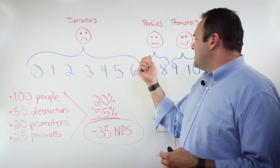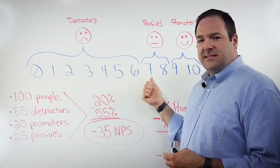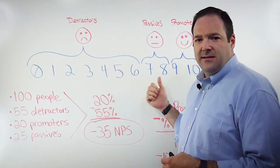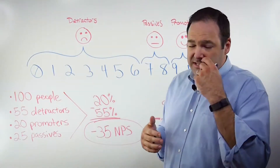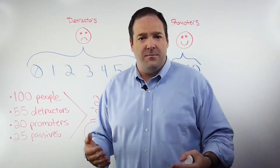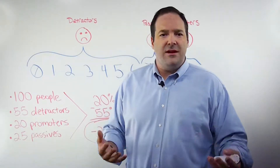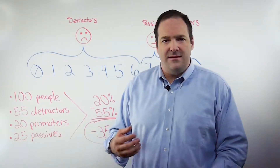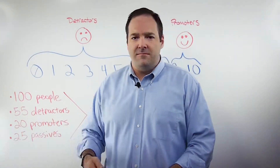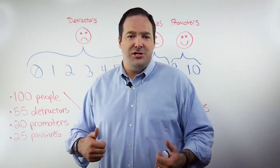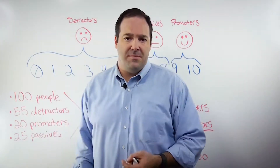And then there's the passives — 7s and 8s. These are customers that are good, but they're just really not that loyal, and if given the right offer, they could abandon ship and go to a competitor.